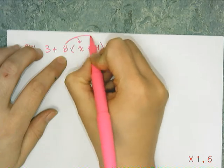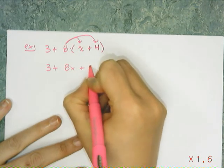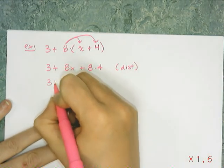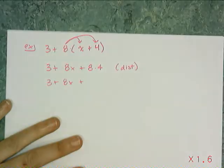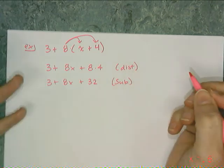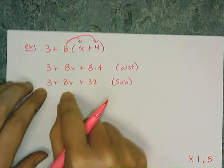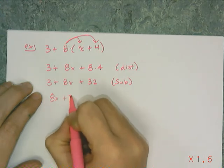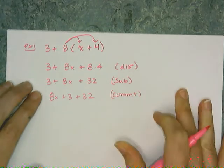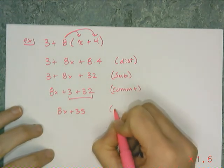So I'm going to distribute first to get rid of my parentheses. The 3 plus stays there, and this becomes 8x plus 8 times 4 — that's the distributive property. Now to simplify, I have to do 8 times 4, which is 32 — that's substitution. Now I need to put the 8x in the front, and the 3 and 32 have to be combined. So I swap these two terms: 8x plus 3 plus 32 — that's the commutative property of addition. Then I combine 3 and 32 to get 8x plus 35, and that's substitution.